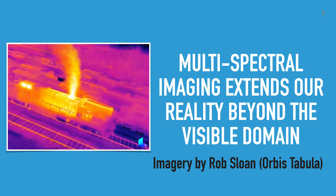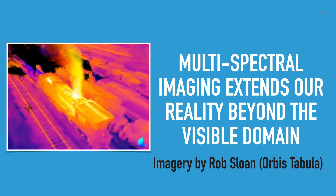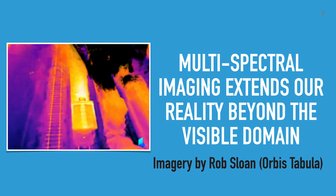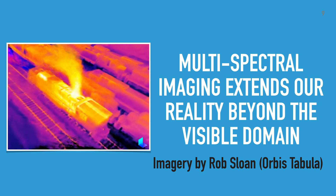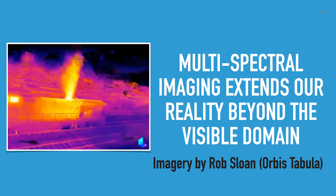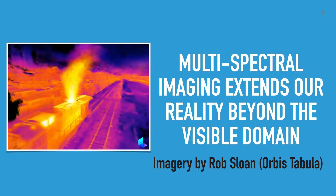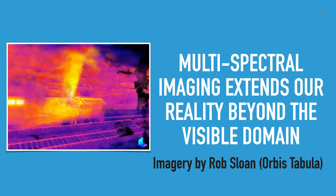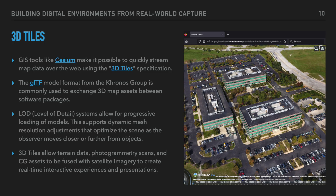When building digital twins, multispectral imaging extends our reality beyond the visible domain. This allows for intricate and detailed representations of the world around us, and it makes it possible to see the environment in new ways such as FLIR thermal imaging, UV light, sonar mapping, and radar. GIS tools like Cesium make it possible to quickly stream map data over the web using the 3D tiles specification. Level of detail systems allow for progressive loading of models, supporting dynamic mesh resolution adjustments that optimize the scene as the observer moves closer or further from objects.